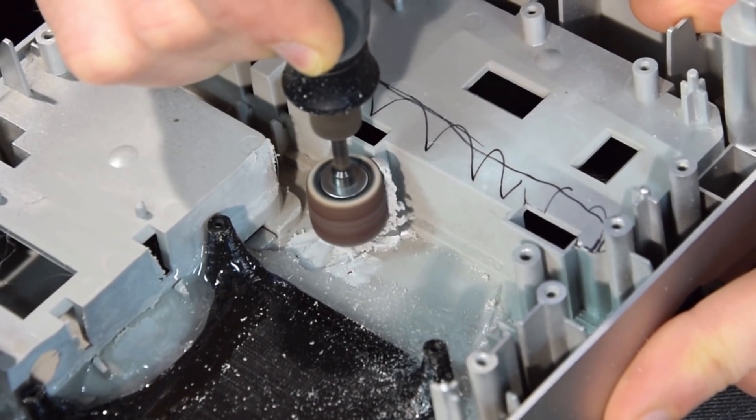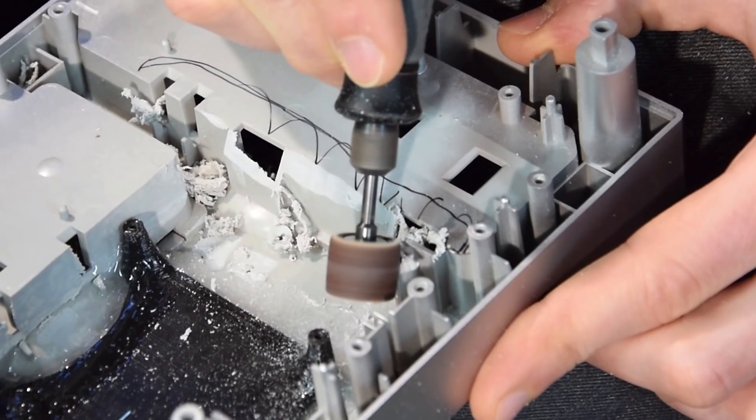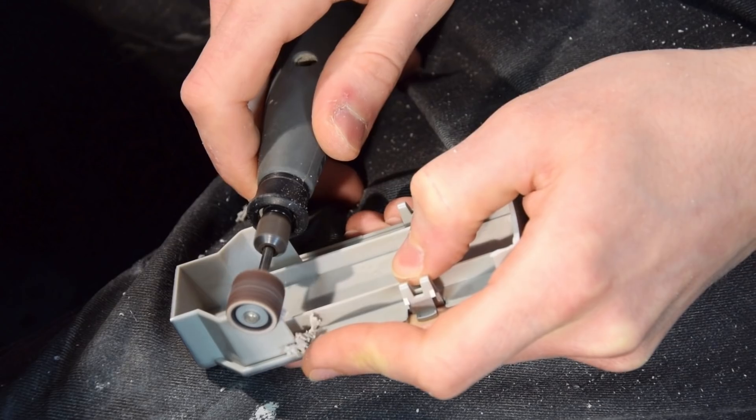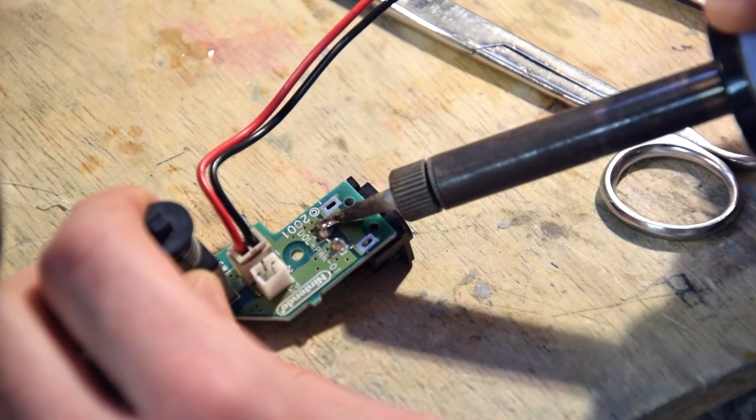To make sure everything will fit, let's give the Switch holder slot some breathing room by grinding some of the insides of the GameCube casing. Then it's time to glue in the cosmetic ports.